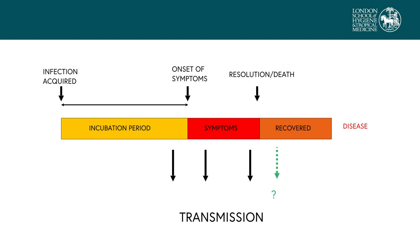Transmission can certainly happen from those with symptoms, and is probably more likely in those with more severe symptoms, accounting for the spread to healthcare workers. It's not yet clear how long people remain infectious after recovery. It's not clear whether transmission can happen from those who are infected and never show symptoms — asymptomatic cases. But the virus has been detected in throat samples from an asymptomatic case, and in a case cluster in China the only known source was someone with no symptoms, so this is a possibility.